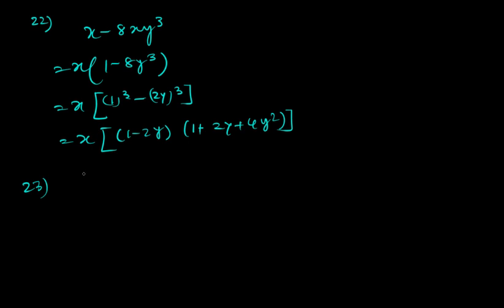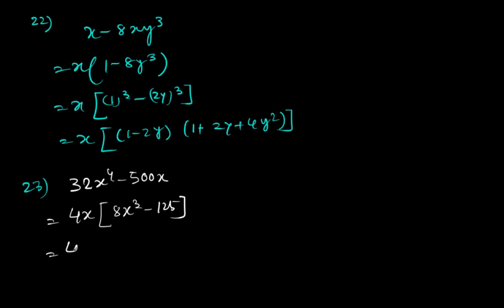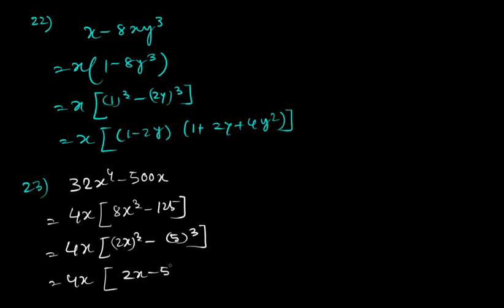Question 23: 4x⁴ – 500x = 4x(x³ – 125) = 4x(x³ – 5³) = 4x(2x – 5)(4x² + 10x + 25). Wait — it is 4x(x – 5)(x² + 5x + 25).